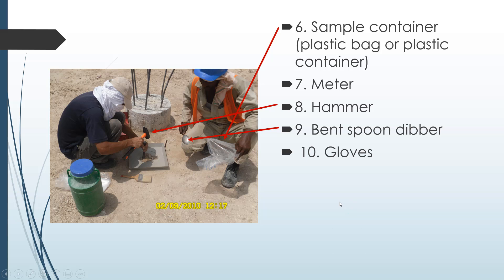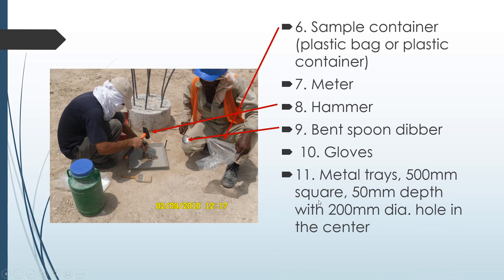We also have a bending spoon and gloves — we don't have gloves at this moment but they should be required. And we have a metal tray, 500 mm square, 50 mm depth, with a 200 mm diameter hole in the center as you can see, and a brush over there.